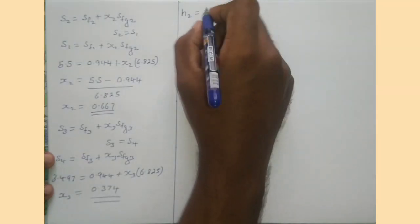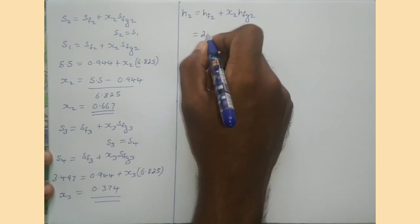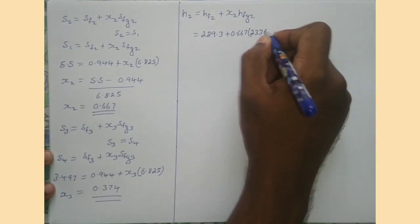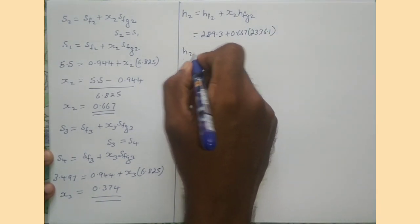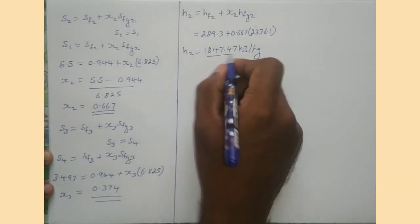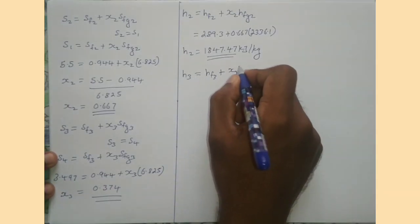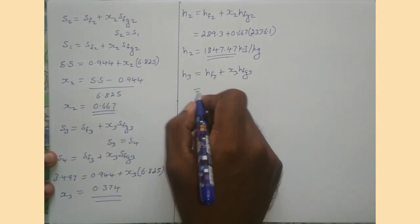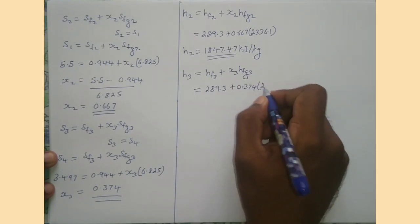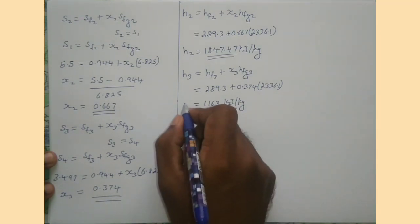Now we can find the enthalpy at state 2: H2 equals HF2 plus X2 times HFG2. Substituting values, we get H2 equals 1847.47 kJ/kg. Similarly, H3 equals HF3 plus X3 times HFG3. Substituting values, we get H3 equals 1163 kJ/kg.